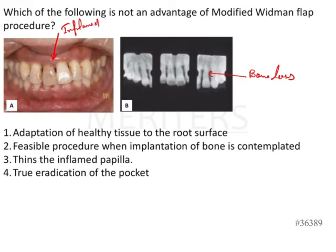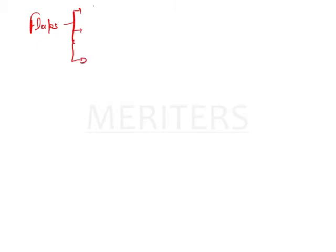The papilla can be inflamed or fibrosed, as prolonged inflammation can lead to fibrosis. There are also deposits on the roots that need to be cleared. To get an overview of flaps before answering the question: flaps in periodontology serve three main purposes. The first is increasing accessibility to root deposits, so that root deposits can be easily removed and cleared.